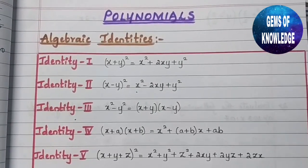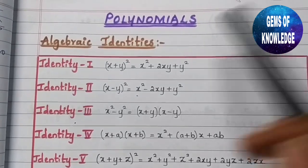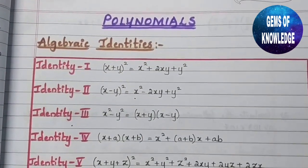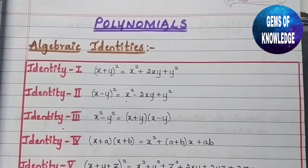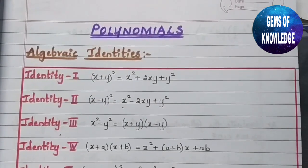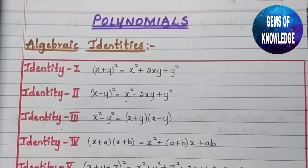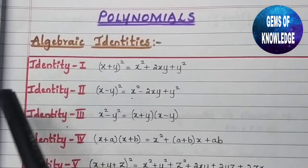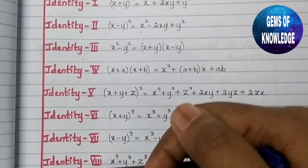Hello everyone, welcome back to my channel Gems of Knowledge. I'm back with another video on the polynomial chapter, that is exercise 4.5. Before starting this video we need to learn what are algebraic identities. Make sure to subscribe to my channel and click on the bell button to get notifications as soon as I post new videos. Here you can see eight identities have been given.